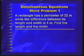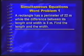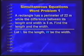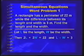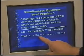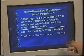A very simple one. A rectangle has a perimeter of 22 meters. The difference between the length and the width is 3 meters. Find the length and the width. We let L be the length and W be the width. The perimeter is 2L plus 2W, and that must equal 22, and the difference must be 3.